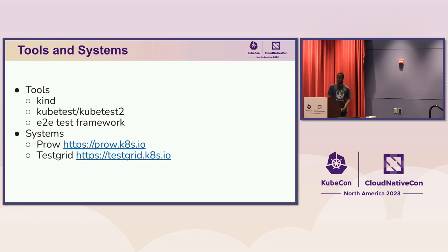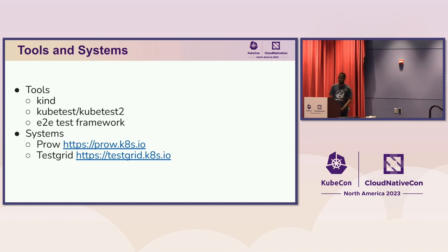The other thing we have is something called the E2E Test Framework — a Go program that allows us to launch all sorts of E2E tests. We also have a couple of production systems. The first one is Prow, which is the Kubernetes CI, where you can view all jobs running and their health and status. The other is TestGrid, which is effectively a grid of test results.